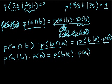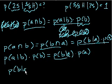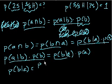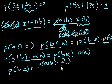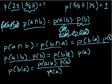Dividing both sides by P(A), we get: the probability of B given A equals the probability of A given B times the probability of B, divided by the probability of A. This is called Bayes' Theorem or Bayes' Law, and this is what we will now use to figure out the probability that we got the two-sided coin after seeing that we got five heads in a row. See you in the next video.